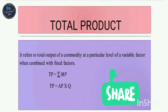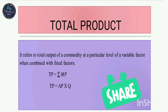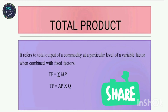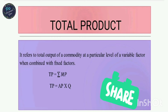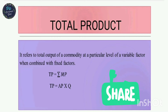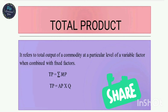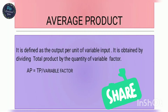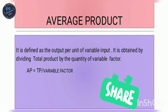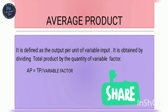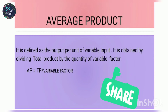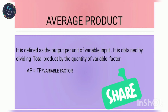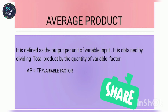Total Product involves one variable factor and fixed factors. The Total Product formula is the summation of MP — marginal product. Also, TP equals AP multiplied by Q, where Q is the quantity. Moving on to Average Product — it is output per unit of variable input.